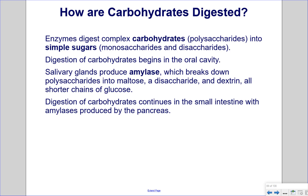How are carbohydrates digested? Enzymes digest complex carbohydrates — polysaccharides — into simple sugars: monosaccharides and disaccharides. Digestion of carbohydrates begins in the oral cavity.